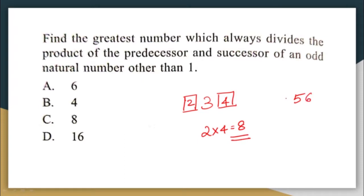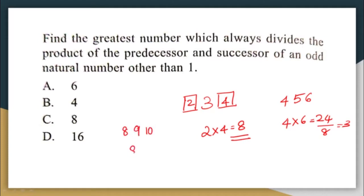So I have four multiplied by six which is equal to 24, and 24 is also divisible by eight. Now let us take another number — let us take nine. I have 10 and I have eight, so eight multiplied by 10 is equal to 80.